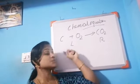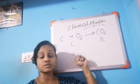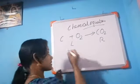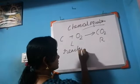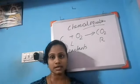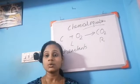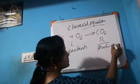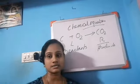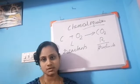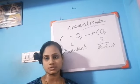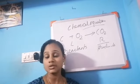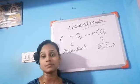Substances which react with each other are called reactants. Here, carbon and oxygen are the reactants. After the reaction, we get carbon dioxide — that is the product. So the left side always has reactants, and the right side has products.